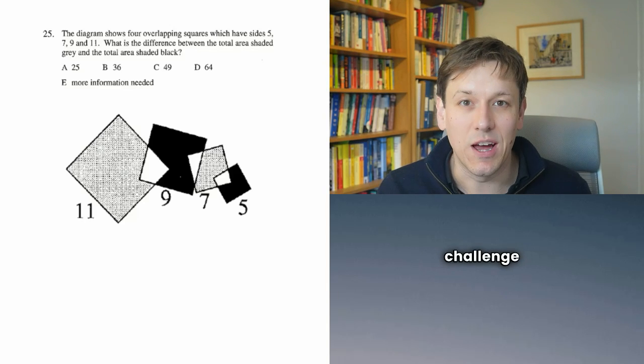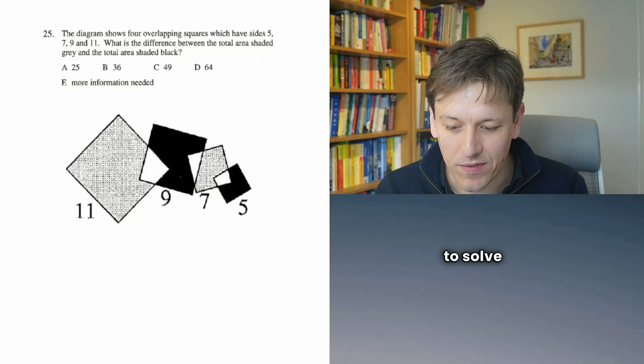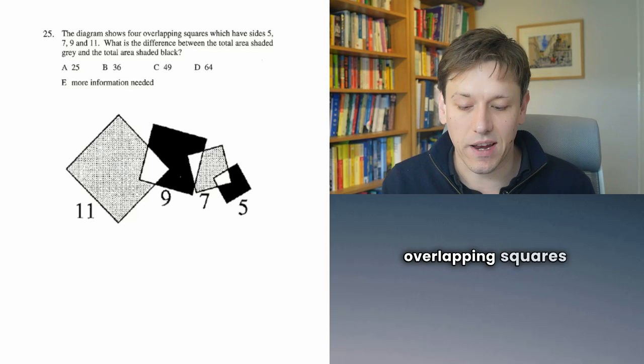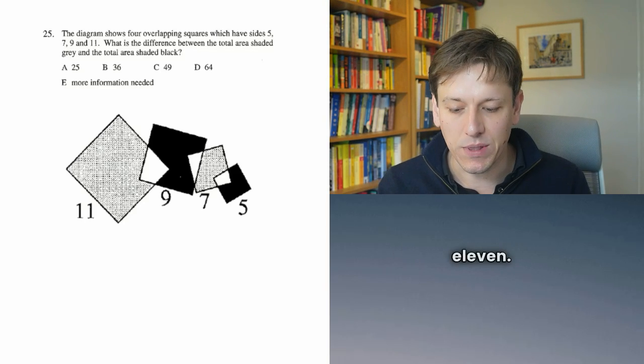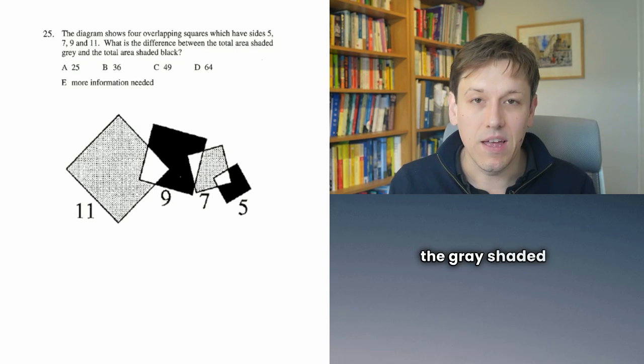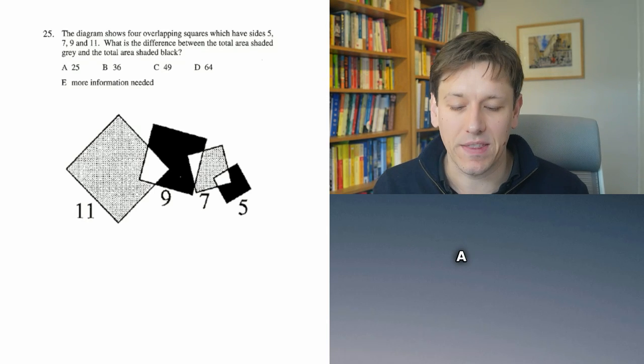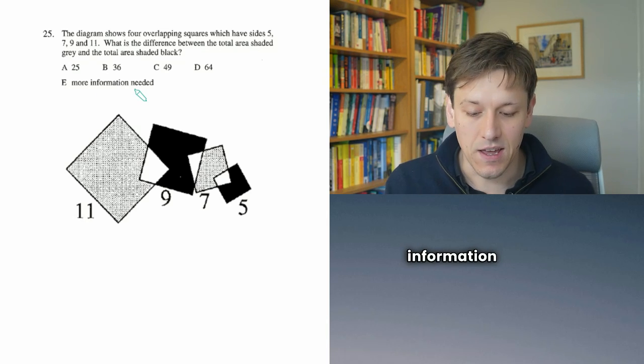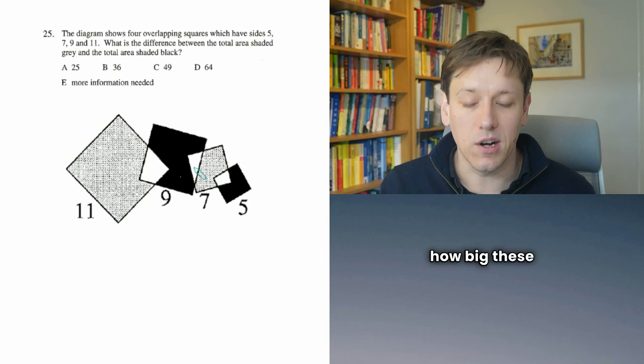This is such a good maths challenge question. I'm going to show you how to solve it. We've got four overlapping squares with side lengths 5, 7, 9, and 11. We want the difference between the grey shaded area and the black shaded area. A lot of people think the answer is more information needed here, but in fact, it doesn't matter how big these overlaps are.